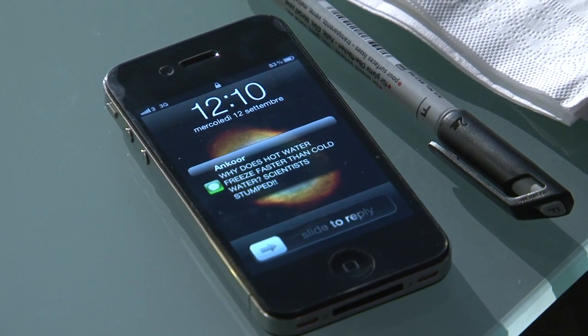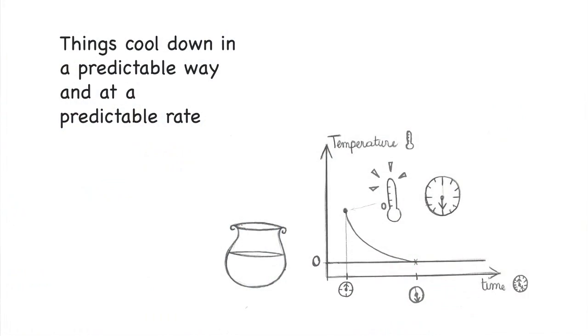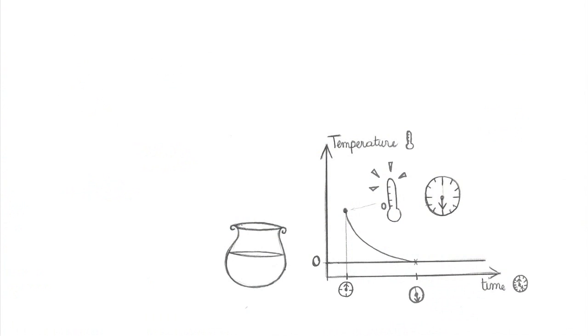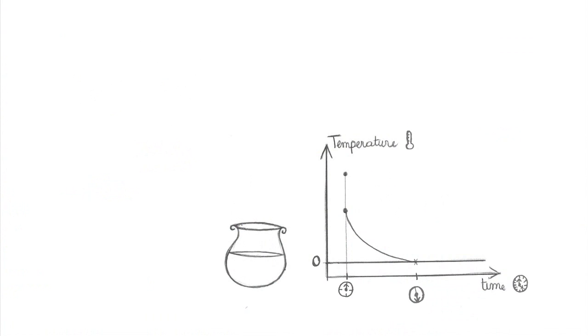That can't be true. That can't be true because based on Sir Isaac Newton's law of cooling, things cool down in a predictable way at a predictable rate. If things are hotter, they still follow the same laws and take longer to cool down. Why would hot water freeze faster than cold water?